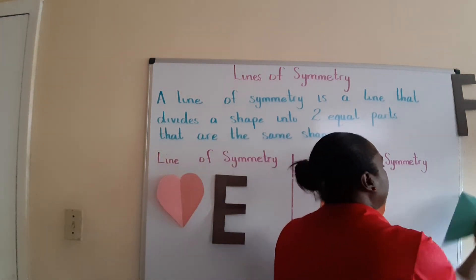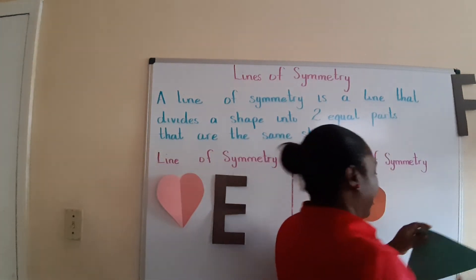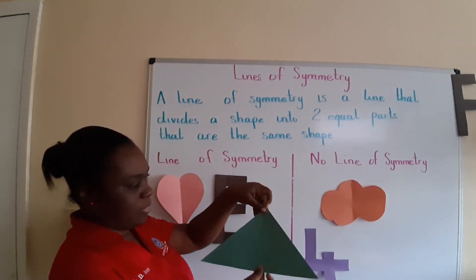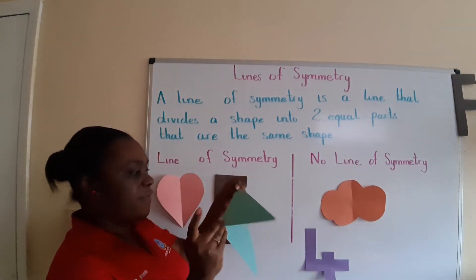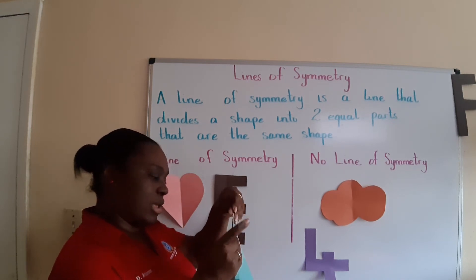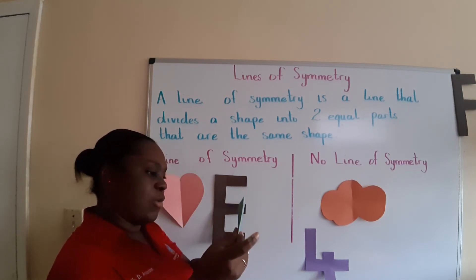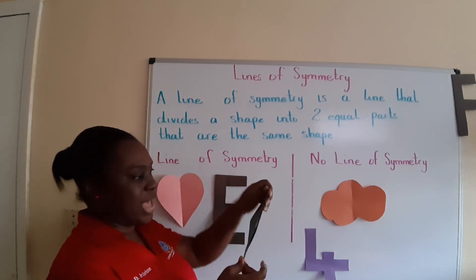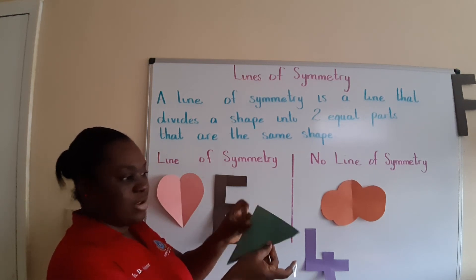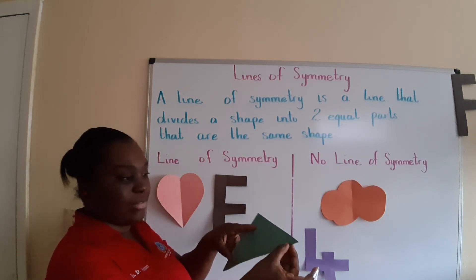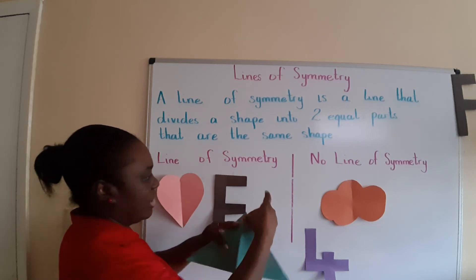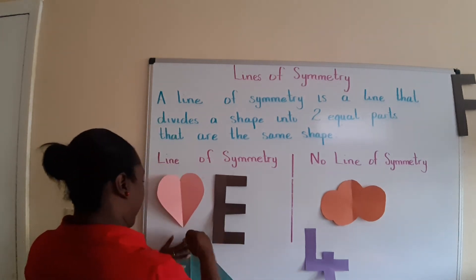What about the triangle? We can fold it and we see that the two sides are the same — it makes another triangle. So yes, there's a line of symmetry there.